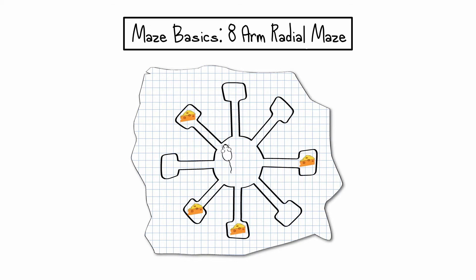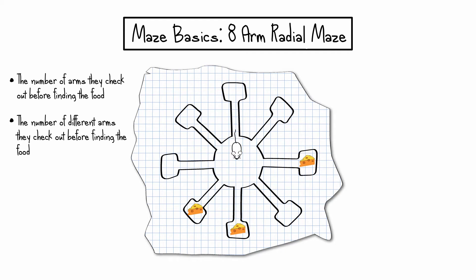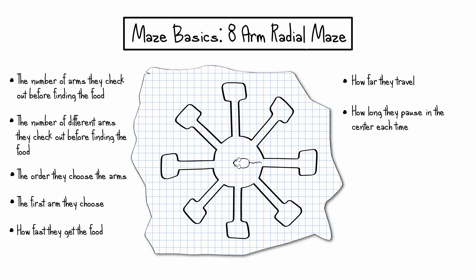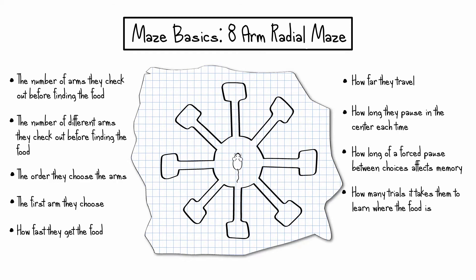Behavioral parameters include the number of arms the animal explores before finding food, the number of different arms the animal explores before finding the food, the order they choose the arms, the first arm they choose, how fast they get the food, how far they travel, how long they pause in the center each time, how long a forced pause between choices affects memory, and how many trials it takes them to learn where the food is.